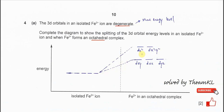The orbitals that move higher are the dz² and dx²-y² — these two orbitals. The three orbitals at lower energy level are dxy, dxz, and dyz. These two sets of non-degenerate orbitals form when the octahedral complex ion forms — two above and three below. You might not need to put the names; you just need to draw the lines.